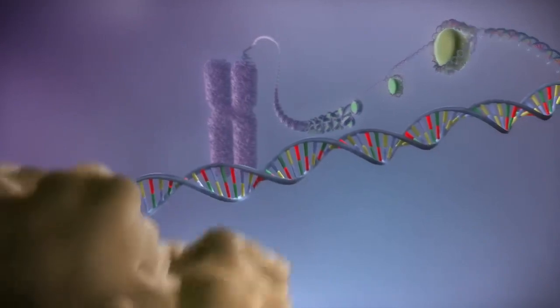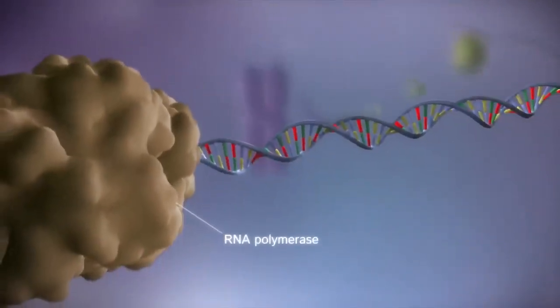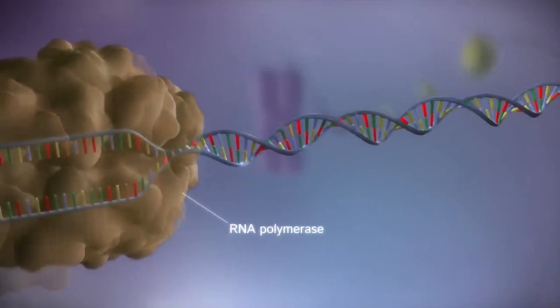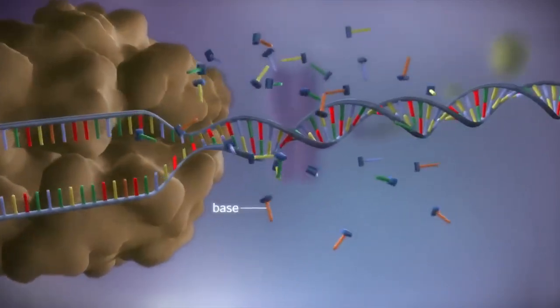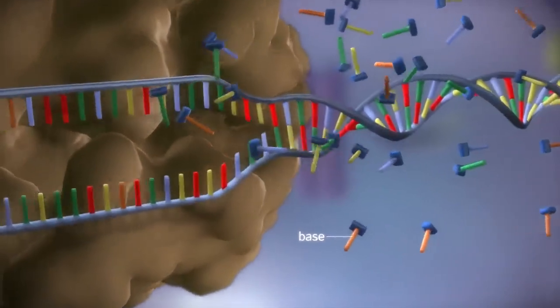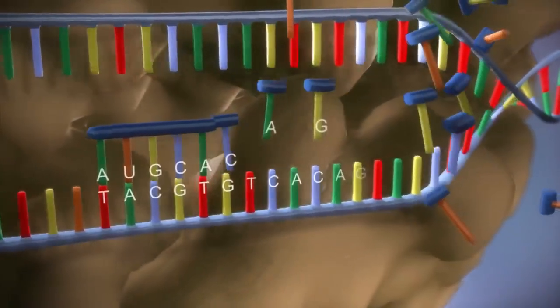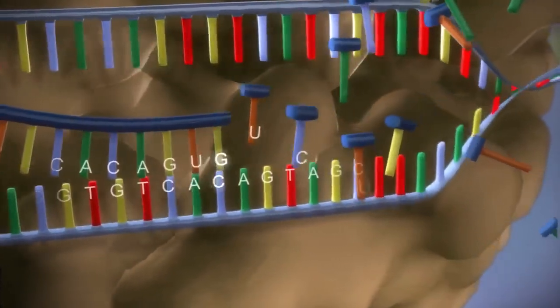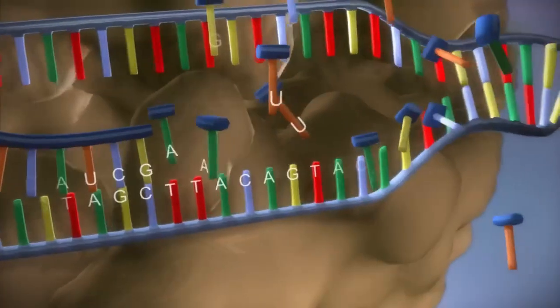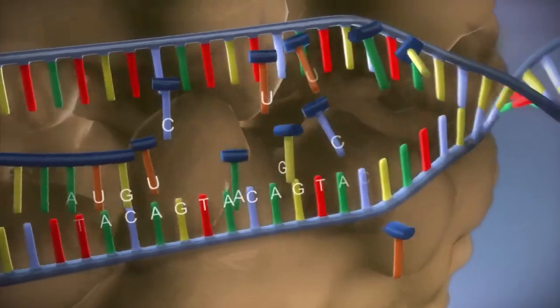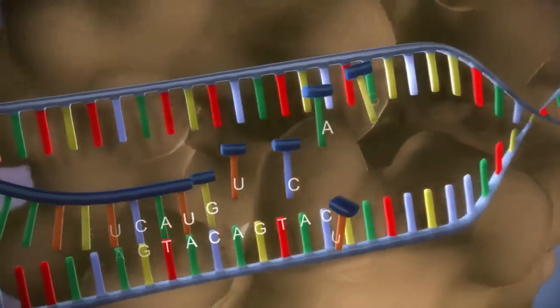When a gene is switched on, an enzyme called RNA polymerase attaches to the start of the gene. It moves along the DNA, making a strand of messenger RNA out of free bases in the nucleus. The DNA code determines the order in which the free bases are added to the messenger RNA. This process is called transcription.